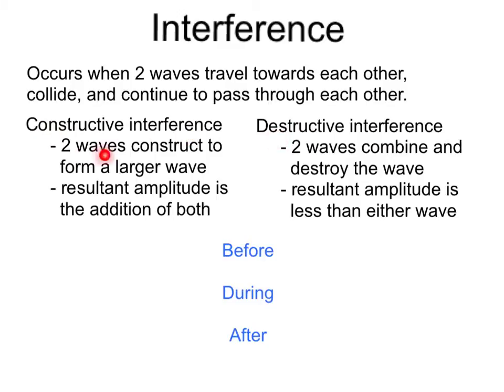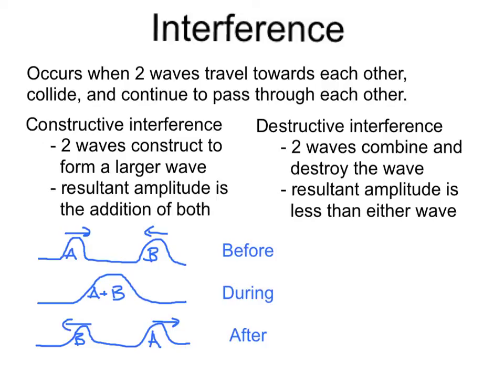In constructive interference, this is where two waves construct to form a larger wave, thus resulting in an increased amplitude that is the addition of both. So if I take two waves here, let's say we have pulse A and pulse B, and let's say A is moving to the right and pulse B is moving to the left. Well the moment these collide, we're going to form a much larger wave, and that will result in an amplitude of A plus B. Now after they collide, A and B are still going to remain and continue going in the direction they were going in originally. So A is now over here, still traveling to the right, and B is over here, still traveling to the left. These waves simply pass through each other because waves are energy.